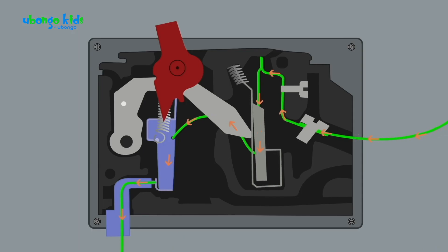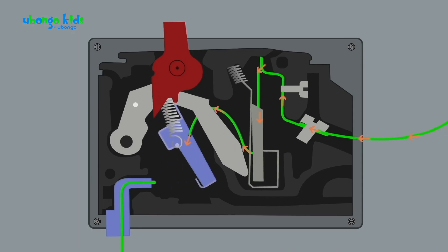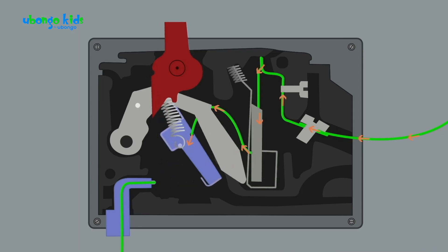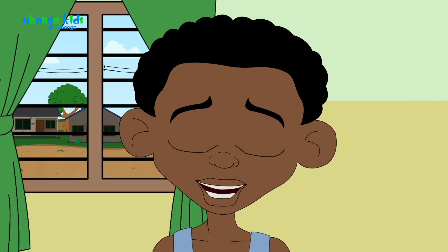The switch creates a space in the circuit. That means the electricity can't flow through and complete the circuit, so the circuit is broken.